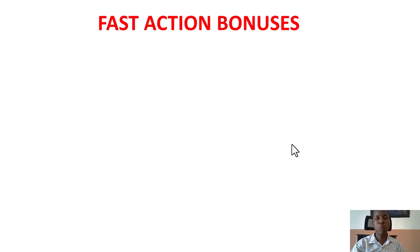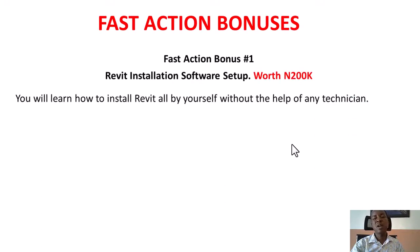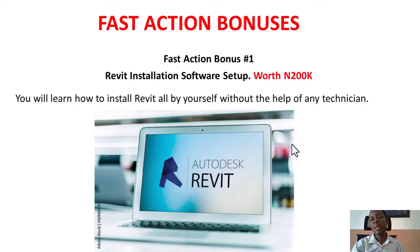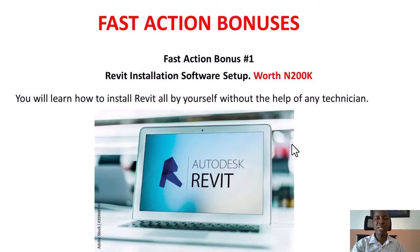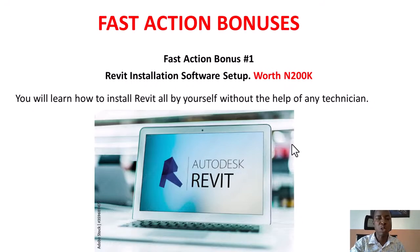If you are getting this course today, I am going to reward you with fast action bonuses. Bonus number one: Revit installation software. I am going to give you my own copy of Revit installation software — versions 2015, 2017, and 2023. I will also show you how to install and register it yourself without needing a technician, and you can use it as long as you want. Bonus number two is Acrobat X Pro. Acrobat X Pro is used to combine multiple PDF drawing files into one document to send to your client — more professional that way. It is also used to convert drawings to PDF so clients who don't have Revit can view drawings on their phone.